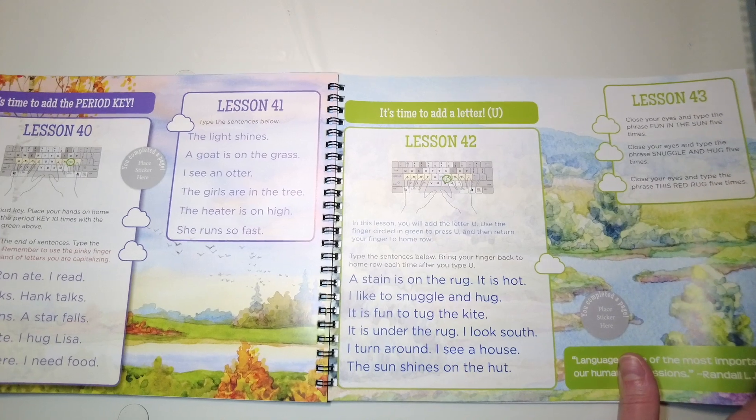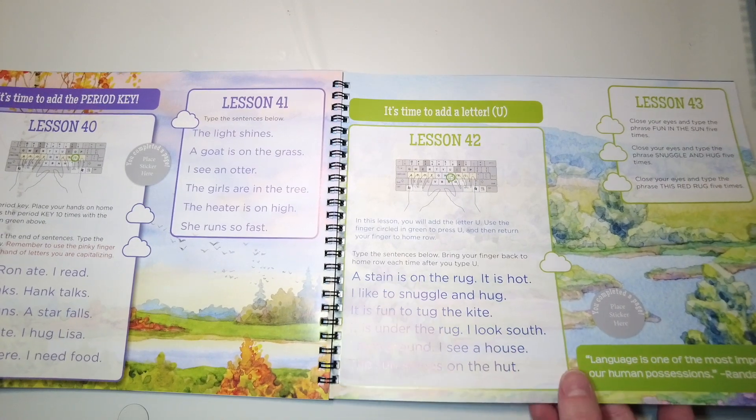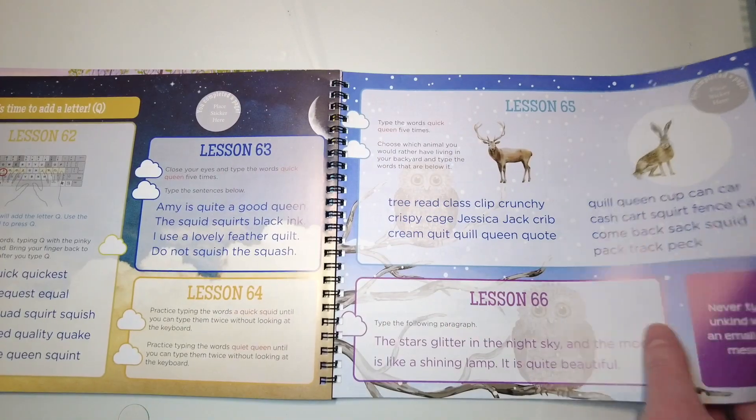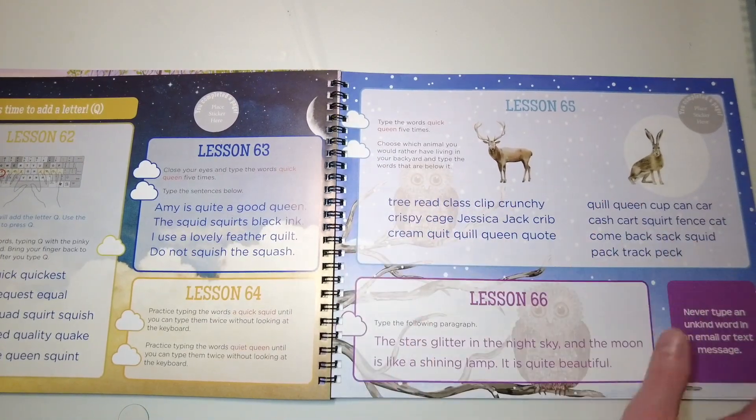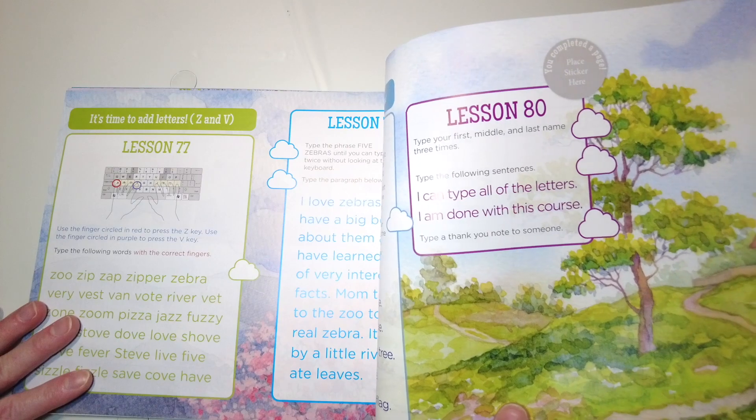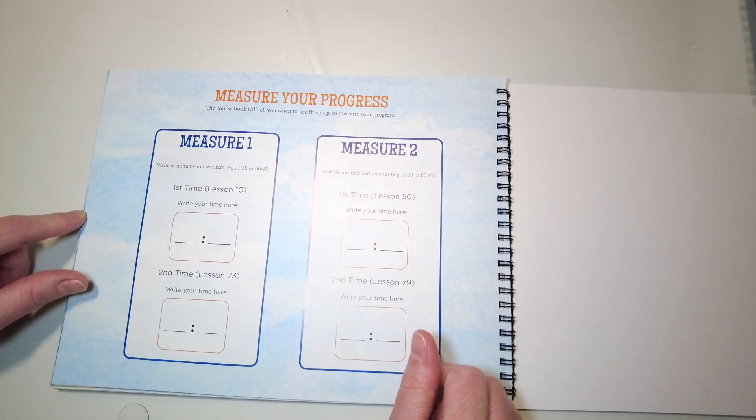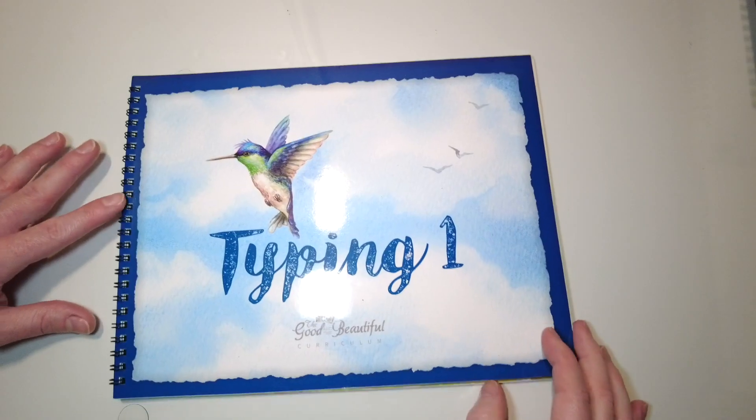I love the pretty pictures in the background too. All right, so there's 80 lessons, so there are some progress checks as well. So that's nice. So that is Typing 1. I do have a separate video for the family subjects that will be coming out next. I hope this was helpful and that you enjoyed flipping through her curriculum with me. And thank you so much for watching. If you made it through to the end of the video, I appreciate you.